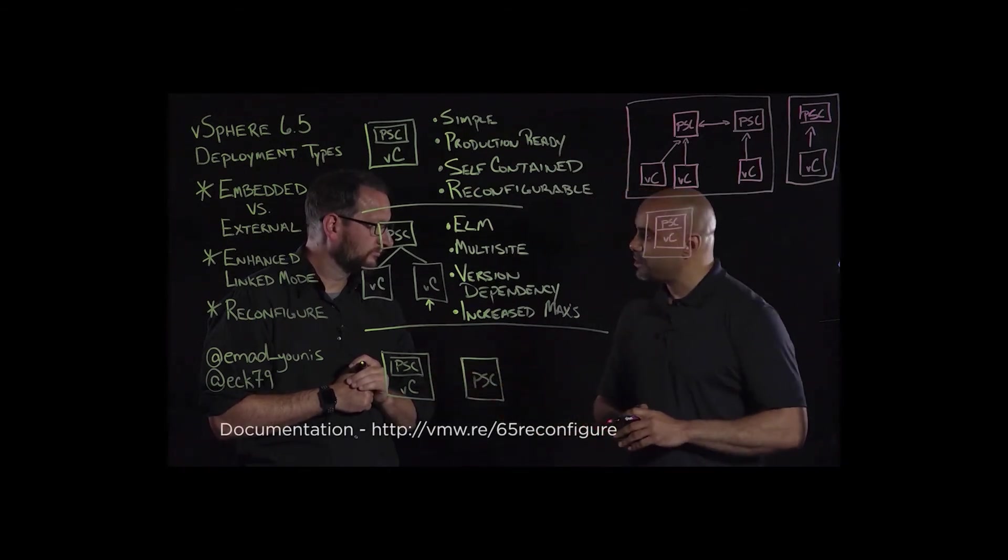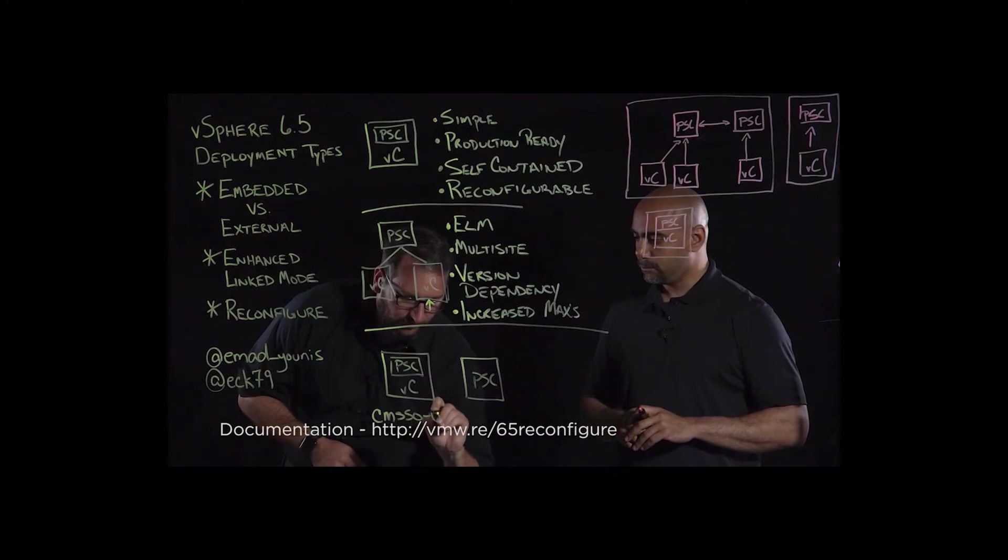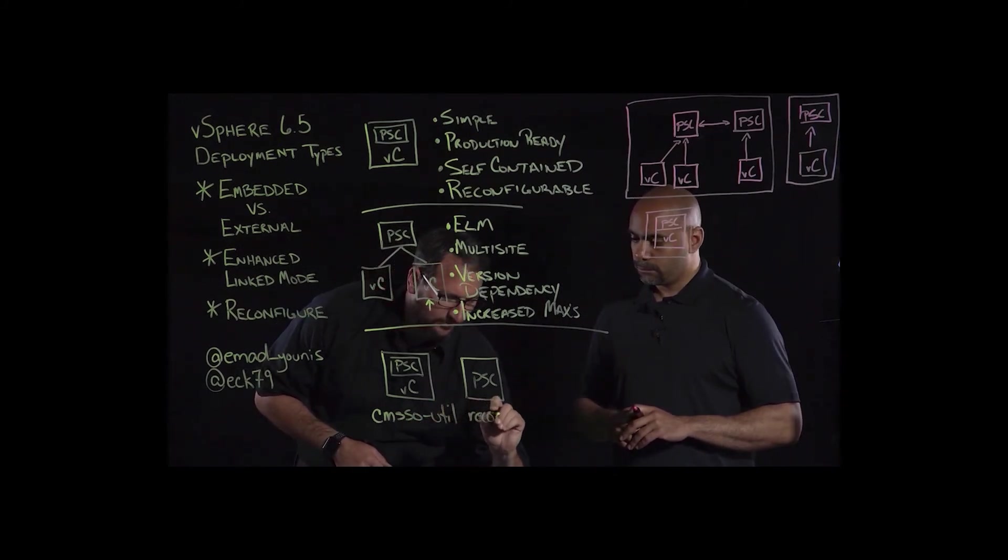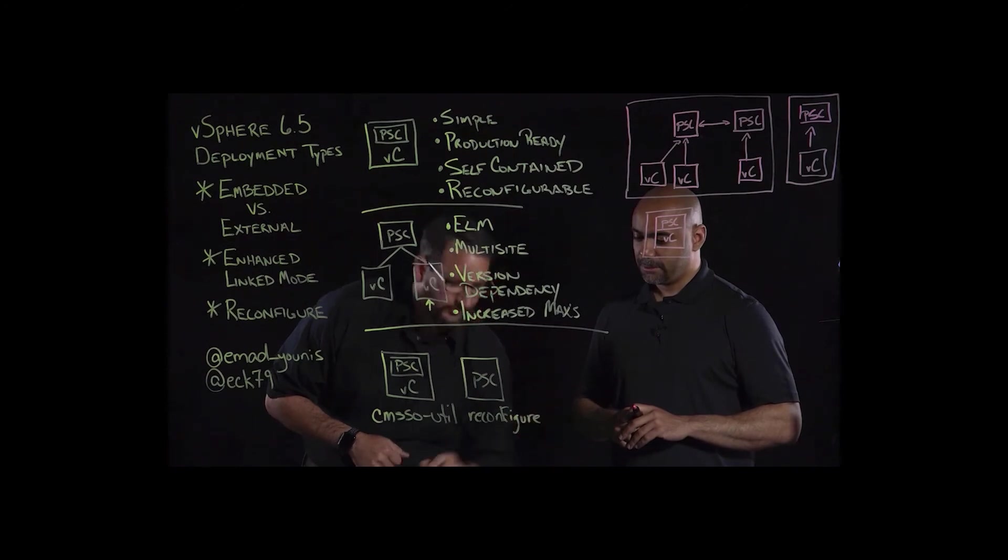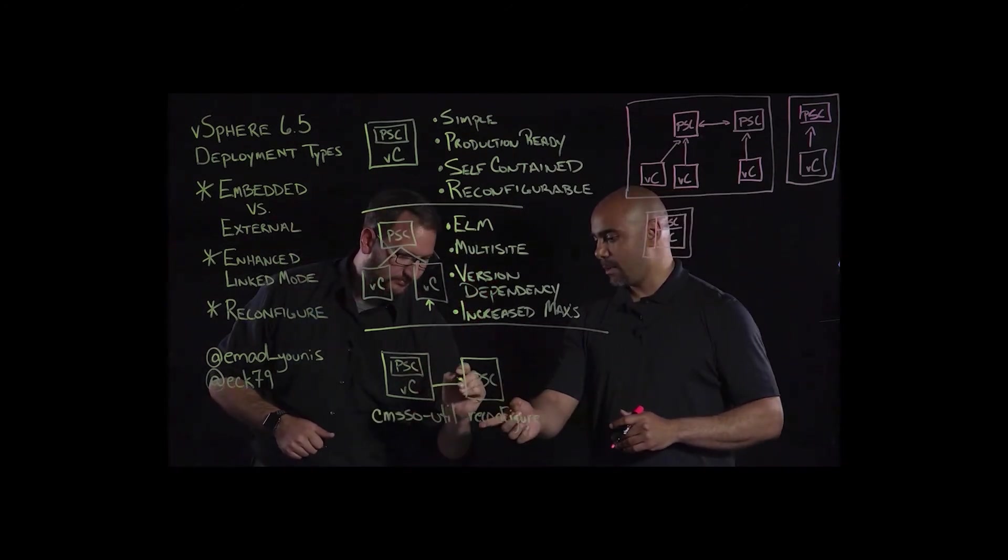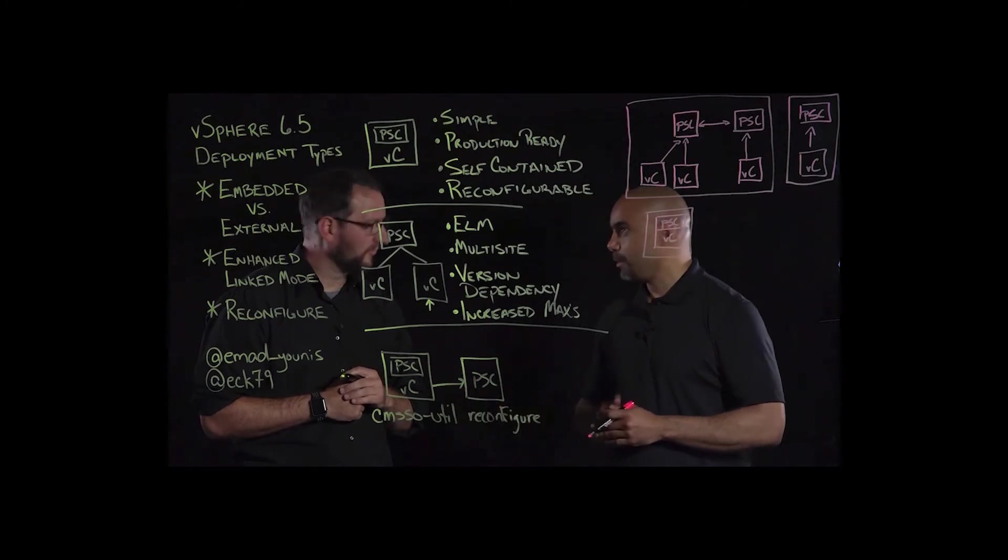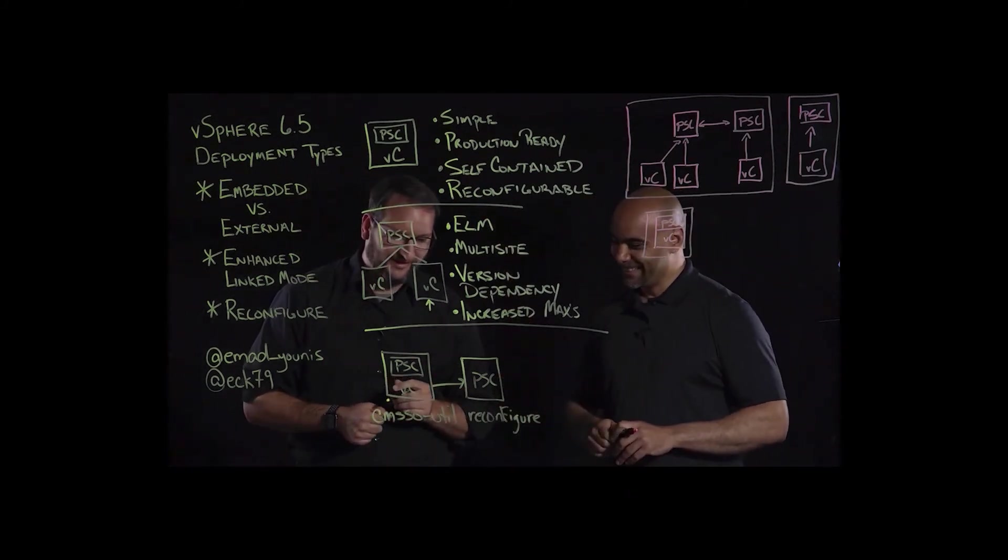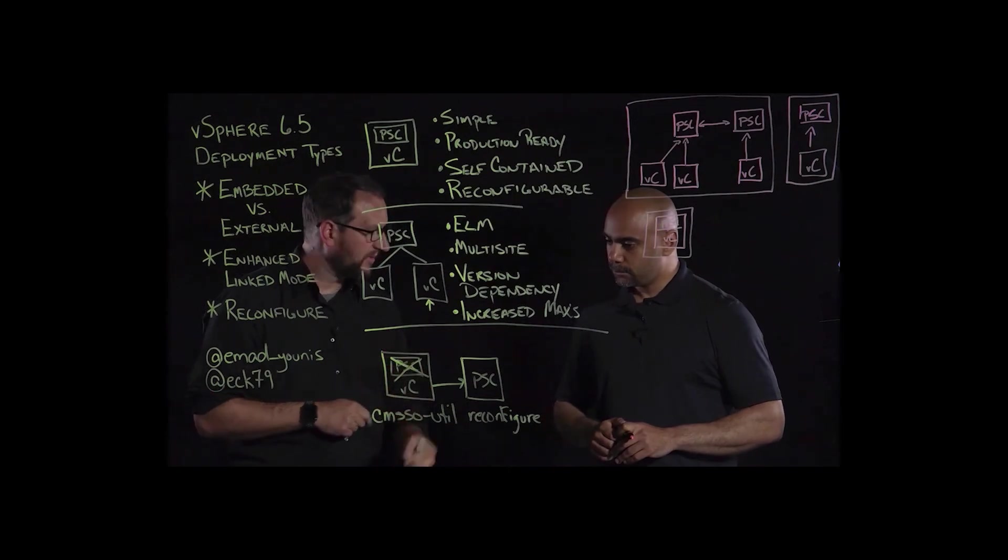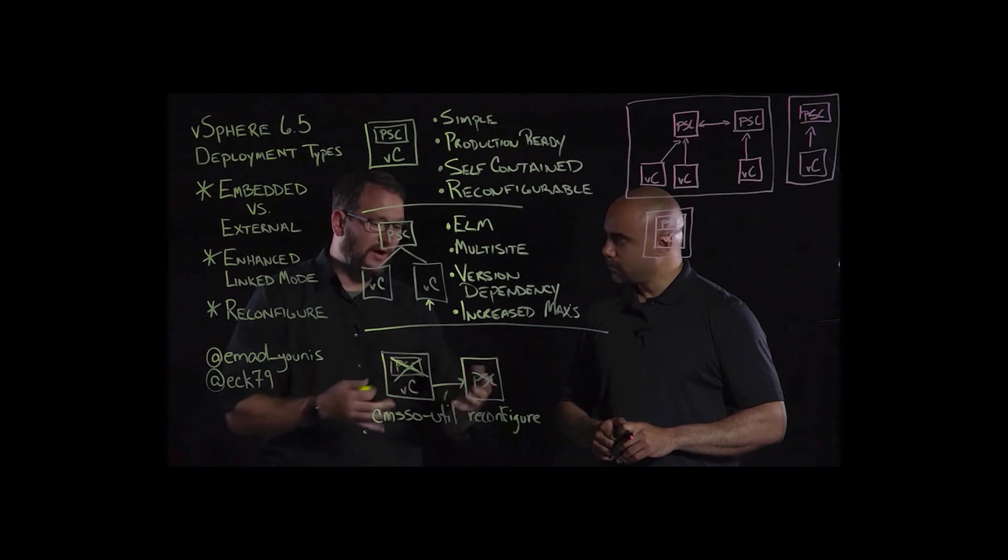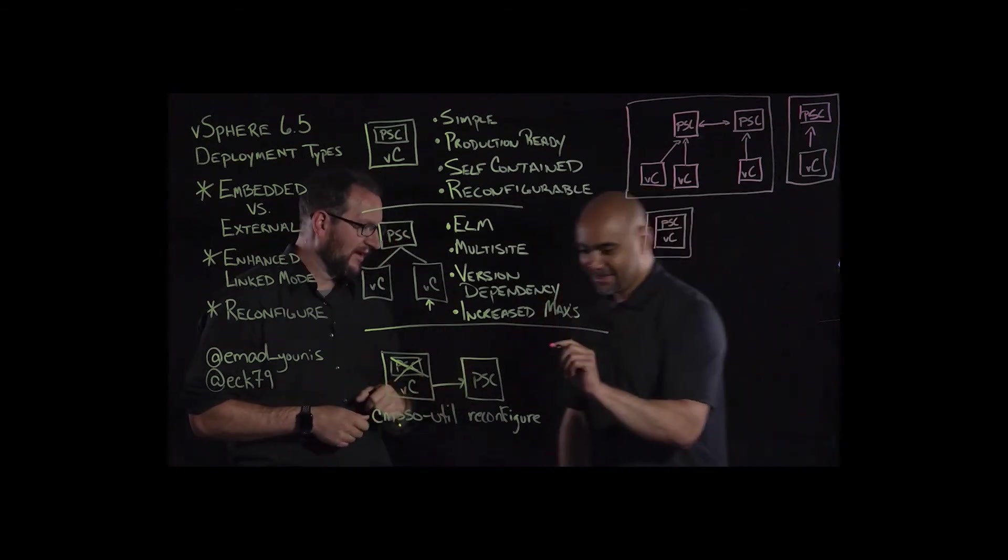And now we're going to repoint this vCenter to this PSC, followed by reconfiguring it, which is going to basically uninstall this PSC. And now this becomes a standalone vCenter server. I think I know the command to do that, and that would be the cmsso-util reconfigure command. That's absolutely correct. But the way I remember it is, cmsso-util is changed mind SSO utility, because I did change my mind.